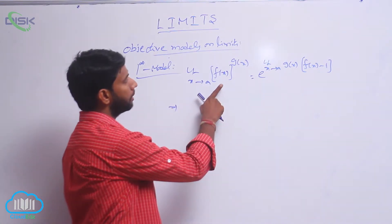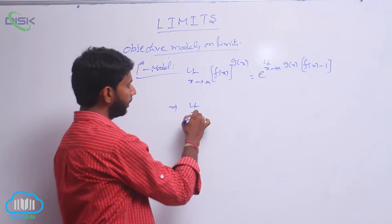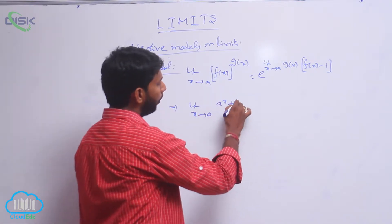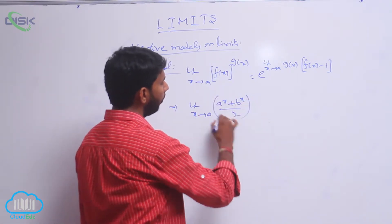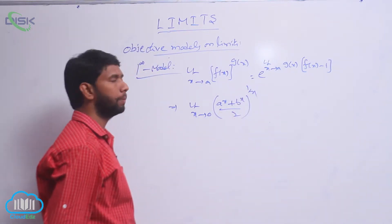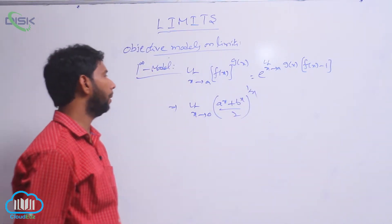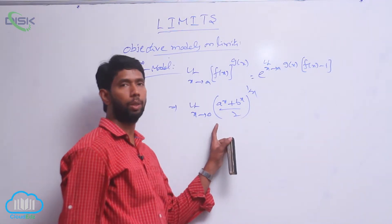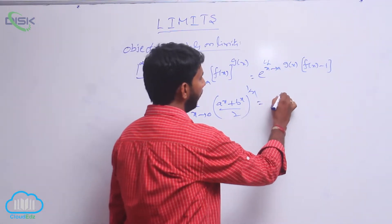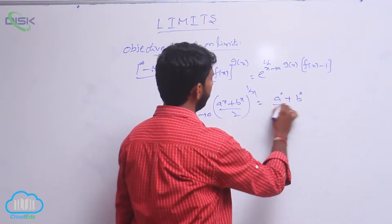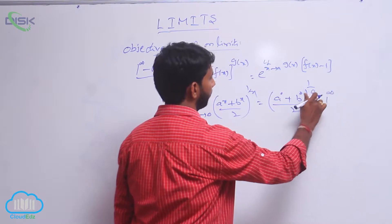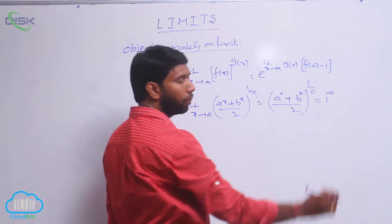Some formulas are based on this formula. That is, limit extends to 0 of [(a^x + b^x)/2]^(1/x). When x = 0, a^0 + b^0 by 2 whole power 1 by 0, that is 1 power infinity form.